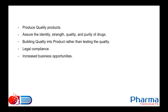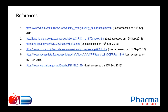What are the outcomes of GMP compliance? If we follow GMP, we produce quality products. We assure that the identity, strength, quality, and purity of drugs are as per requirements. We build quality into the product rather than testing for quality. We comply with all legal requirements, gain increased business opportunities, and importantly — you may be the customer for what you are manufacturing. So always try to follow all the requirements and follow GMP. These are the references used in preparation of this presentation.